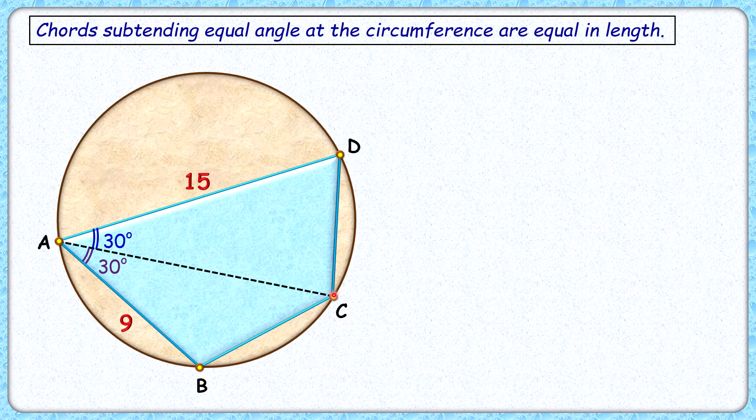Let's assume AC length is a cm. Now in this pink triangle, let's apply the cosine law.